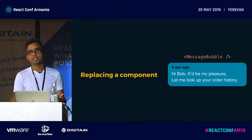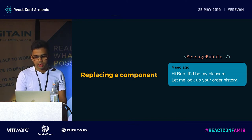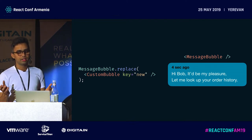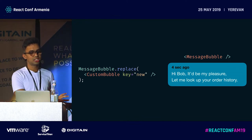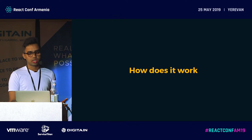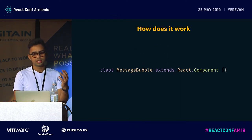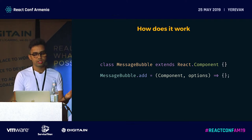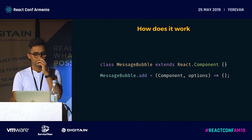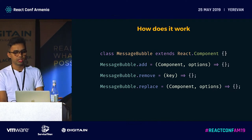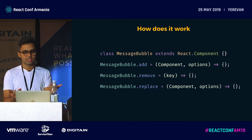For replacing, it's very similar: you call replace on a component and pass your custom component, and it replaces the entire component with what you want. Internally, every programmable component is a class with static properties: dot-add takes a component and an optional parameter with sortOrder; remove takes the key; replace takes the component and options — similar to add, but replaces the entire component. That's a summary of the API.